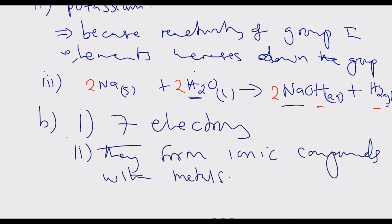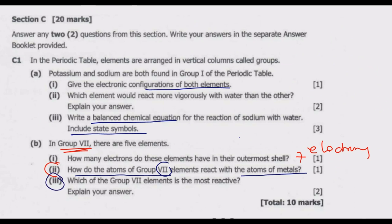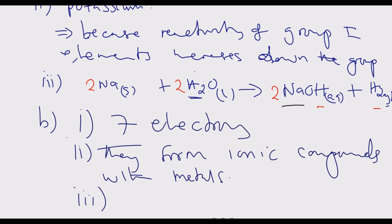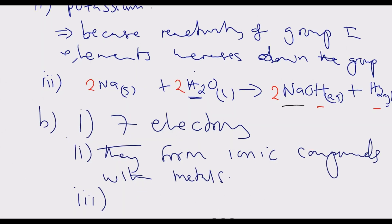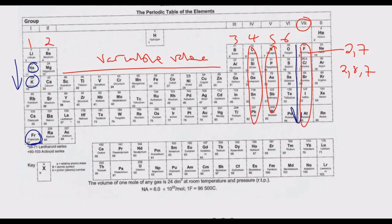We go to Roman numeral 3: which of the group 7 elements is the most reactive? The group 7 elements are known as the halogens. The activity of halogens decreases down the group. As you move down group 7, reactivity decreases. This means the most reactive group 7 element, or halogen, is fluorine at the top of the group.